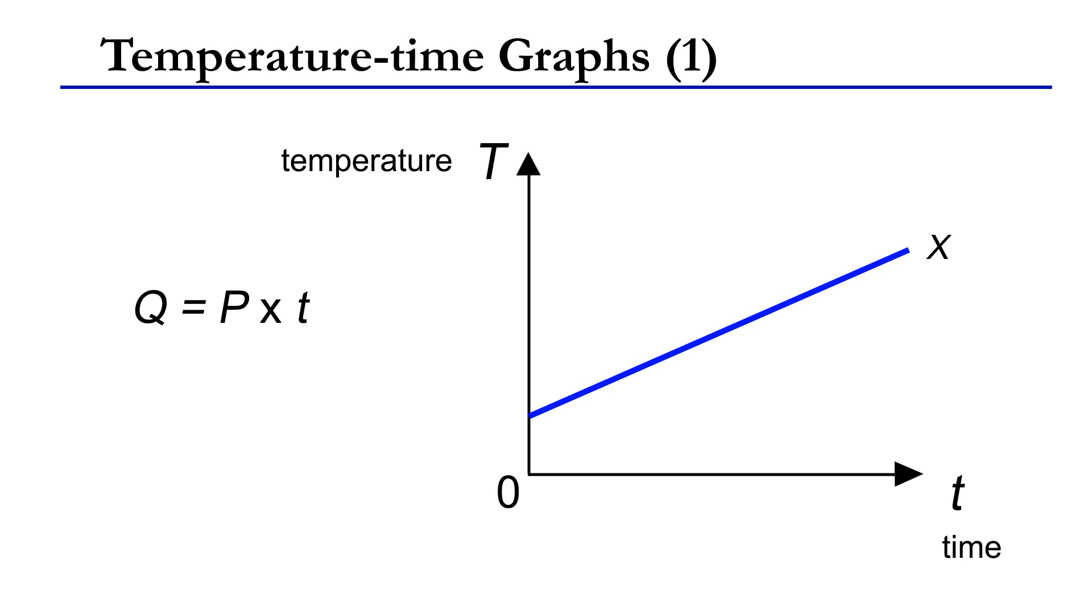Please note that, in plotting a graph, the quantity that can be controlled by us is represented in the horizontal axis. That is, the horizontal axis represents the independent variable which causes changes in the vertical axis.